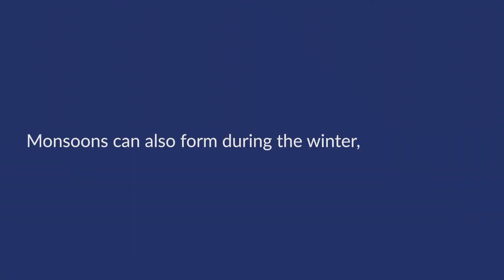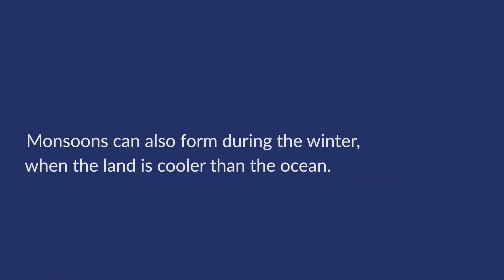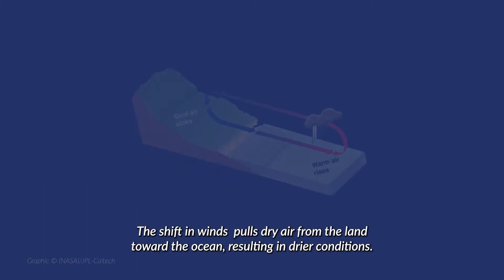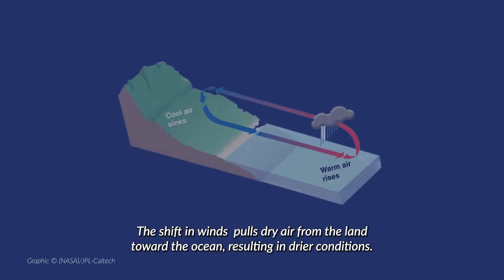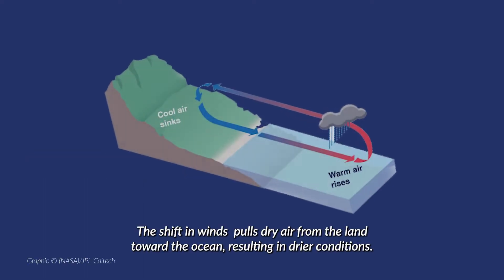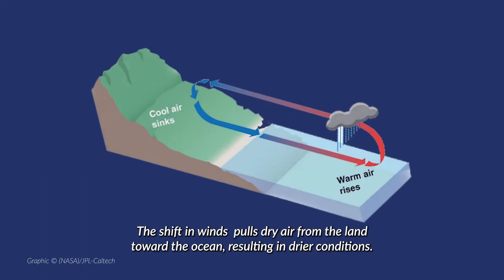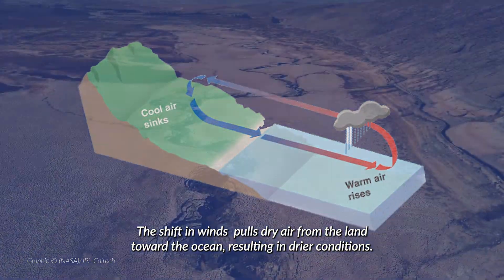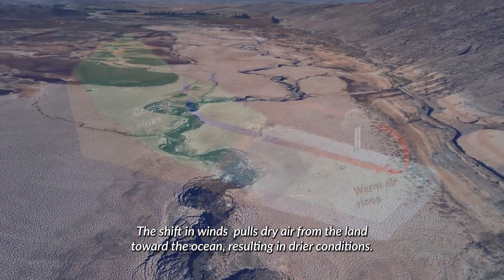Monsoons can also form during the winter, when the land is cooler than the ocean. The shift in winds pulls dry air from the land toward the ocean, resulting in drier conditions.